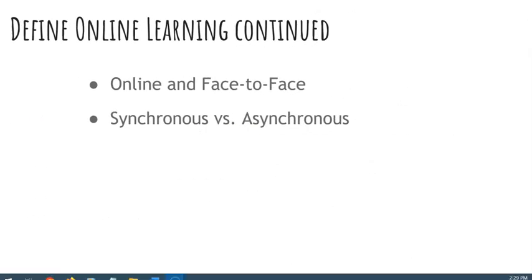So what does that really mean? What this means is that the learning experience can be enhanced by using websites, email, chat rooms, video conferencing, forums, and many other technologies that create learning communities through the use of the internet and a computer. Learning may take place in a traditional classroom, at home, at a public library, or even at a coffee shop. The credits that a student earns for completing a course would be the same as if they had attended a face-to-face classroom.